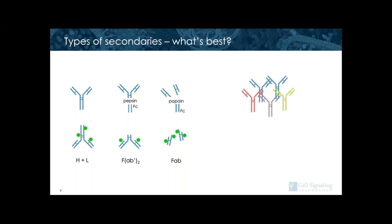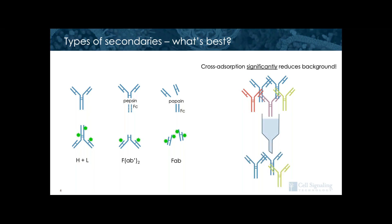Regardless of secondary type that you choose, the most important consideration is to use a highly cross-absorbed secondary. Secondaries come from purified sera and are generally polyclonal in nature, so there may be some antibodies in this mixture that bind non-specifically and give background. By performing cross-absorption, the background-producing antibodies can be removed, and this greatly increases the performance of your secondary.